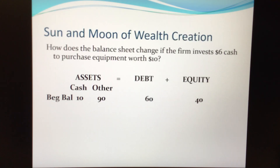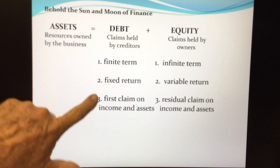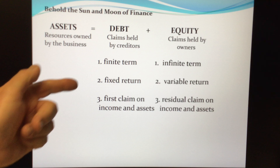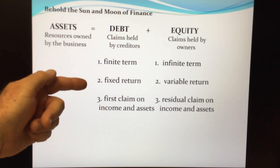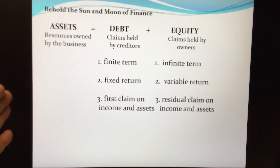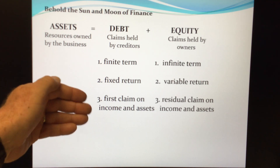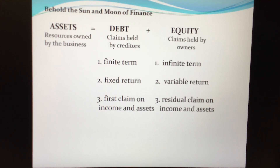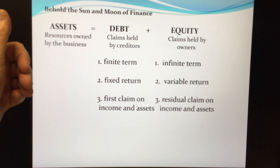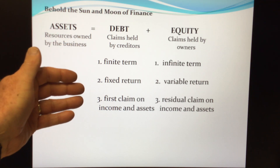These distinguishing features are pretty important. What they all mean is that creditors have a better idea of what they're going to get, when they're going to get it, and that they're going to get it — compared to equity holders. The fixed return means creditors have a legally binding promise of what they'll receive. The finite term means there is a fixed schedule that must be observed. And ultimately, debt represents a primary claim on income and assets relative to equity. So debt, as a class of security, represents a lower risk investment from an investor's perspective than equity does.